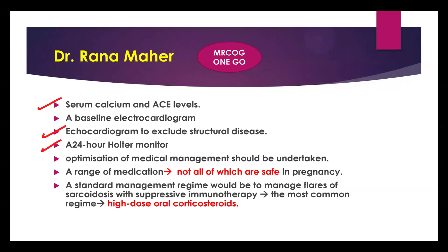Baseline investigations include full blood count, urea and electrolytes, liver function tests, serum calcium, ACE levels, baseline ECG, echocardiogram, and 24-hour Holter monitor. For a patient with a flare during pregnancy, we can offer high-dose oral corticosteroids — they are safe to use, however they increase the risk of gestational diabetes, so offer screening between 24 to 26 weeks.